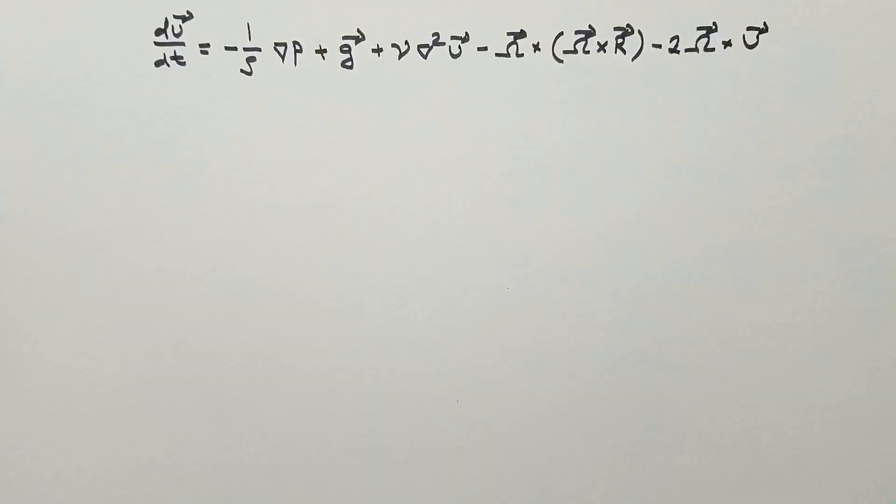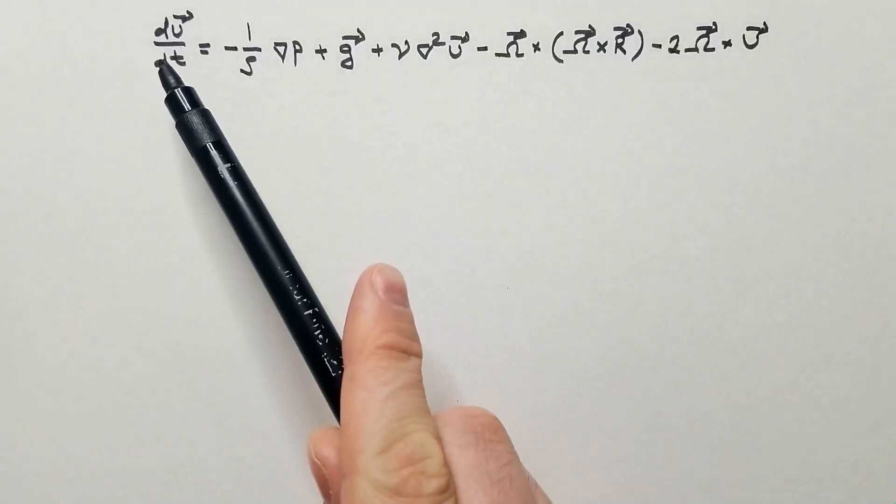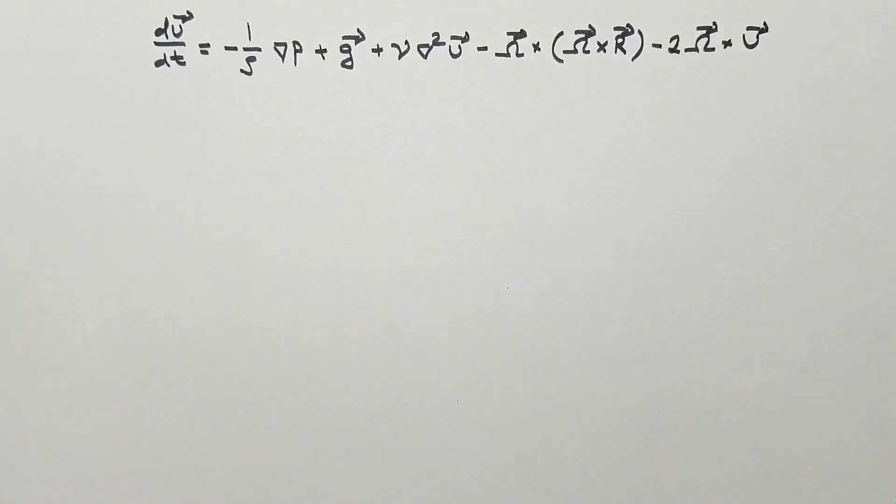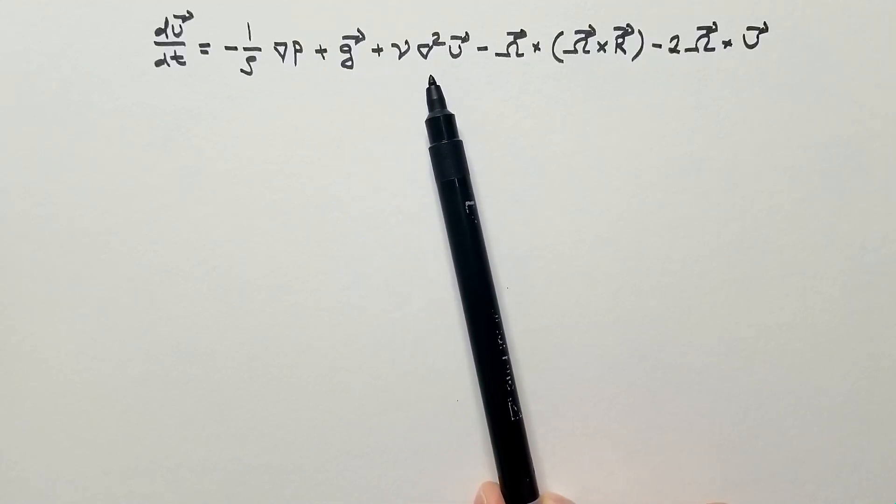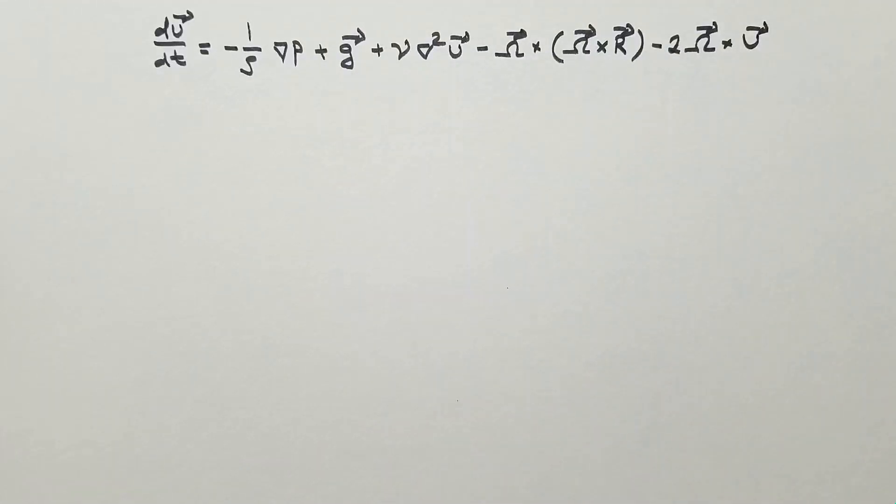We start with the vector form of Navier-Stokes equations that we derived in the last video. Acceleration or material derivative on the left side is the pressure gradient force, gravity, viscous forces, centrifugal force and the Coriolis force.